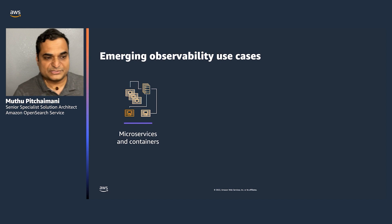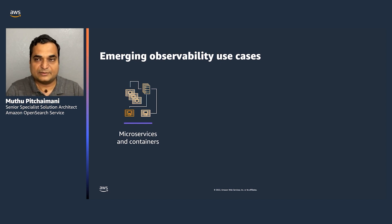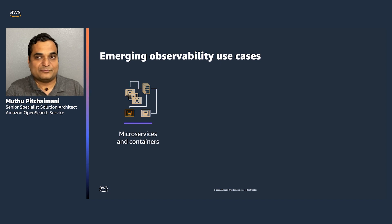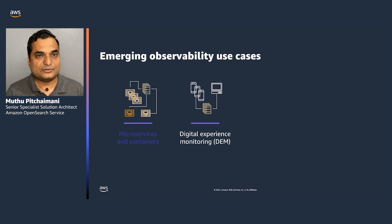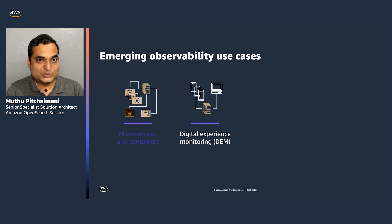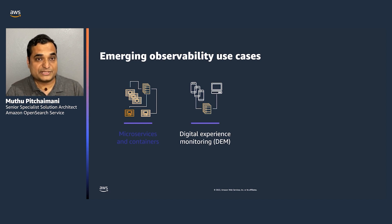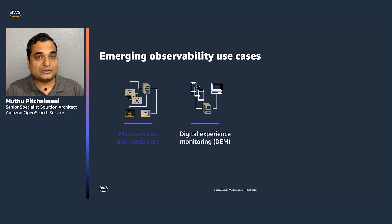What are some use cases for observability? The first and foremost is microservices and containers. As monolithic applications get broken down into microservices, you need to know what is happening within the system — for example, how a request traverses the entire system and how it is serviced. Next is digital experience monitoring, where you have applications interacting with users and you want to know what the user is doing, their behavior, and which parts of the system they engage with most, helping make business decisions and improve system efficiency.